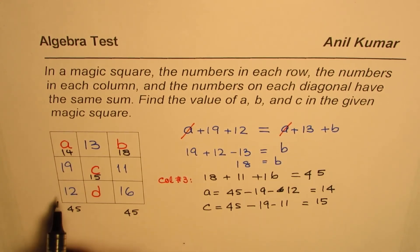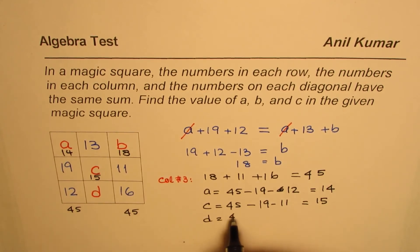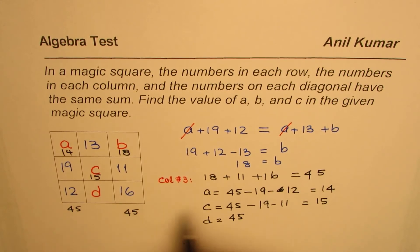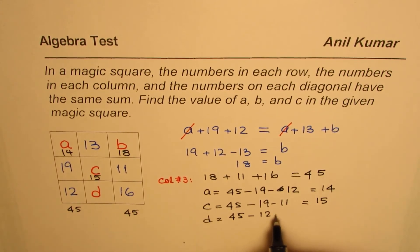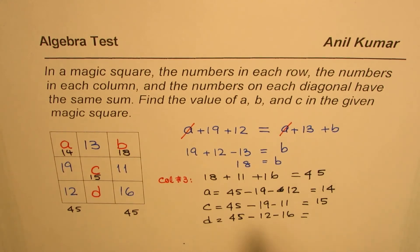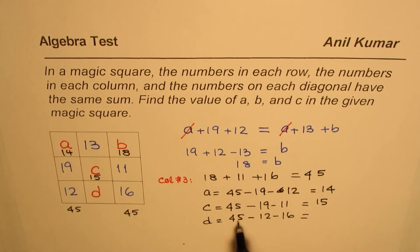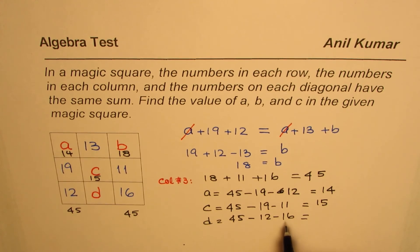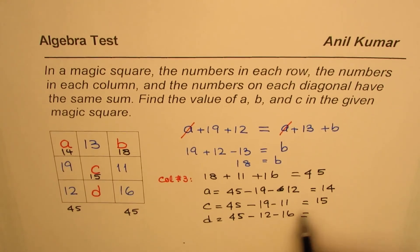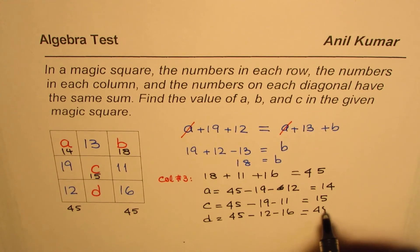To find the value of D, we could take away from 45 the sum of 12 and 16. We can take away 12 and then we can take away 16 to get the value of D. We can add this and then take away from 45.